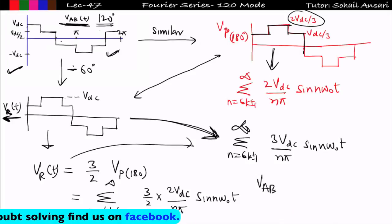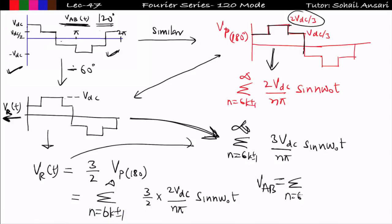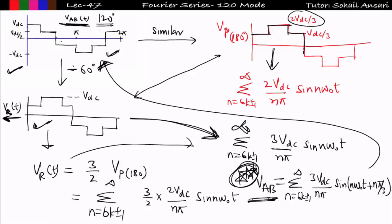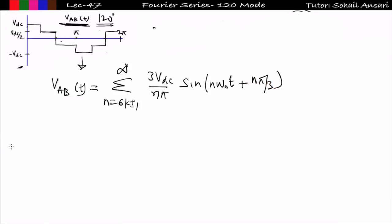I have the Fourier series of the intermediate waveform vr(t). The actual line voltage waveform is shifted 60 degrees to the left of vr(t). Shifting left by 60° (nπ/3 in the argument) gives the Fourier series of vab: summation for n = 6k ± 1 to infinity of (3Vdc / nπ) · sin(nω₀t + nπ/3). This is the Fourier series expression of line voltage in 120-degree conduction mode.